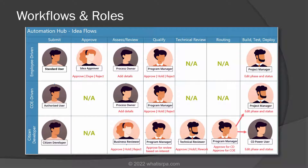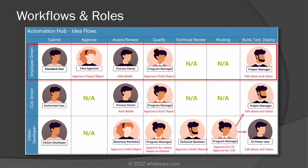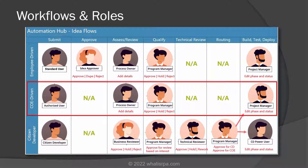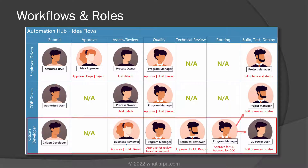As we'll see in future videos, there are three different vectors through which ideas are submitted, and those are represented by the three horizontal lanes. You can see the first lane is employee-driven ideas, the second lane is COE-driven ideas, and the third lane is citizen developer ideas.